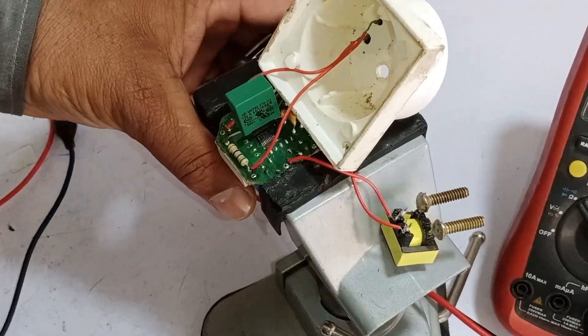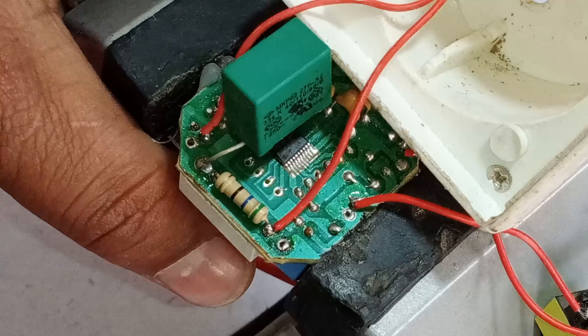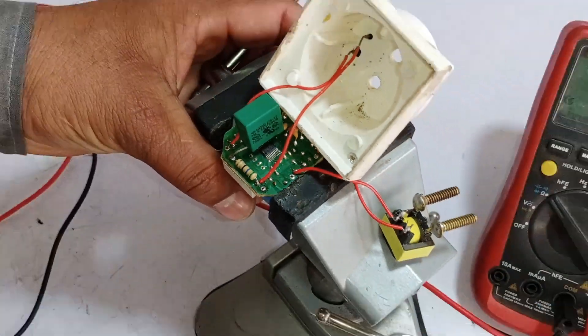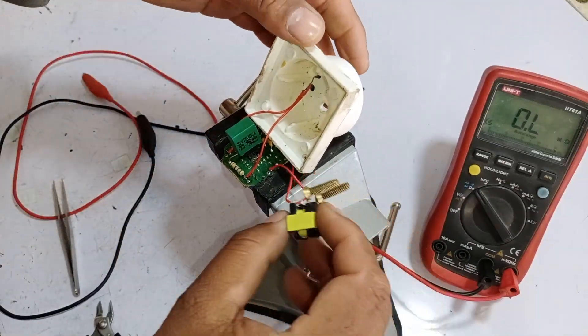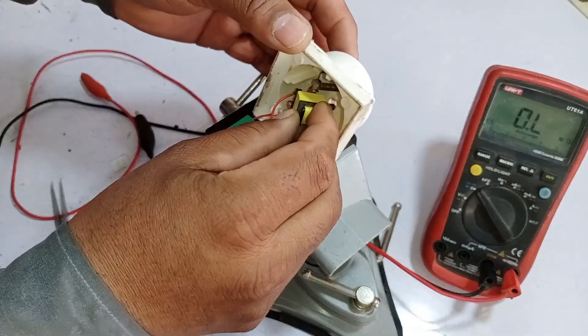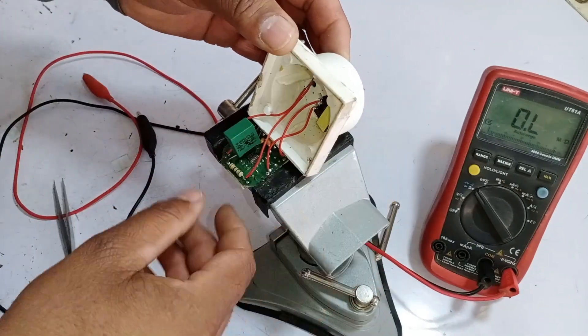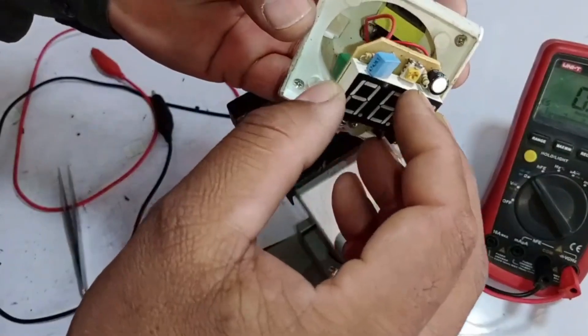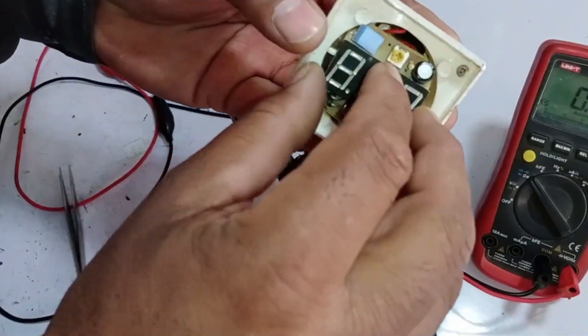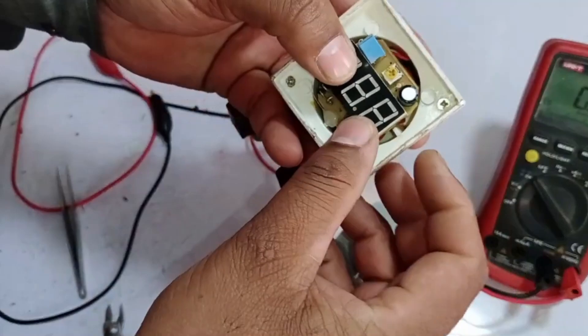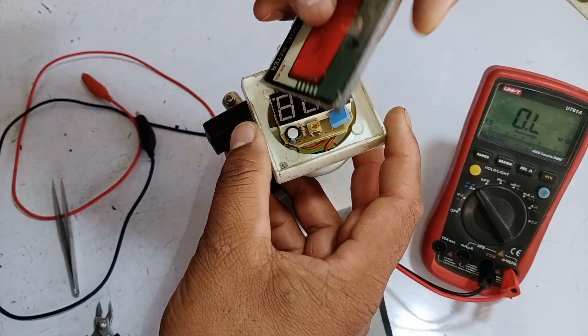The replacement is done, and the new resistor has been installed. Next, we will reassemble the ammeter. First, we will place the current transformer back, followed by the PCB, ensuring no wires are damaged during the process. Finally, we will put the cover back on.